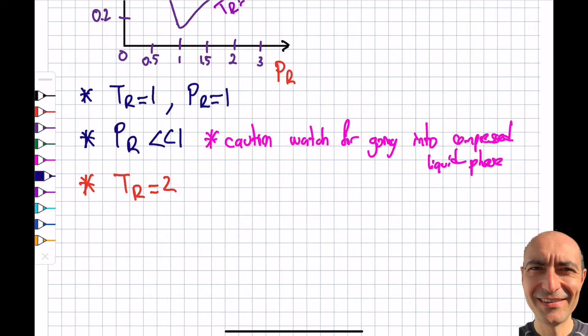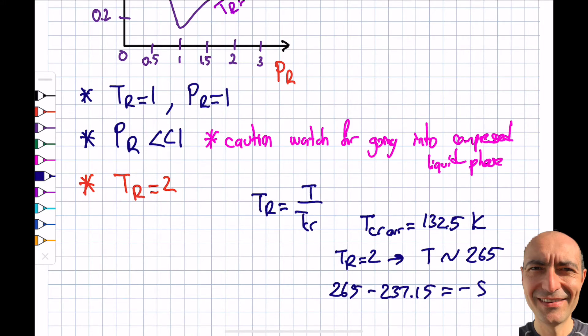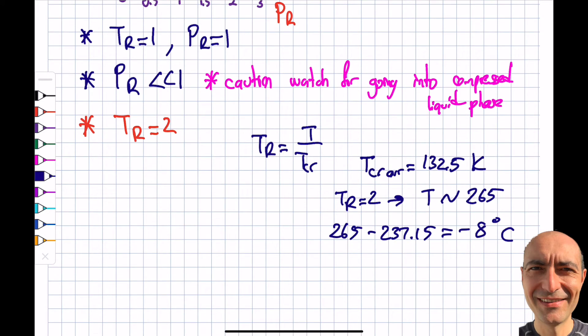But the question arises, where is Tr equal to two? In order to calculate this, Tr is equal to T divided by T critical. So I looked at T critical values for air. It turns out that the T critical for air is 132.5 kelvin. So twice of it, when Tr is equal to two, my T will be give or take 265. That's going to be like minus 8 degrees C. You subtract 265 minus 273.15, you get yourself minus 8 degrees C. Not too bad. That's reasonable.